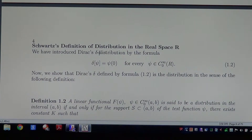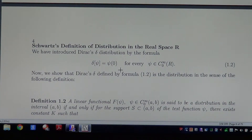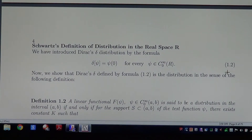Schwartz's definition of distribution on the real space R. We have introduced Dirac's Delta by the formula Delta of Psi equals Psi of 0 for every trial function. Now we show that Dirac's Delta defined by this formula is a distribution in the sense of the following definition.